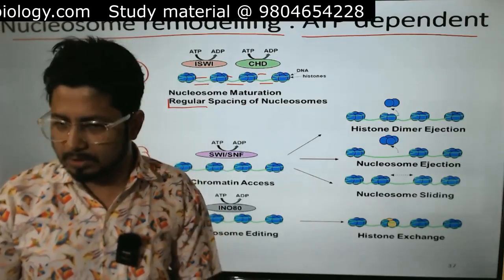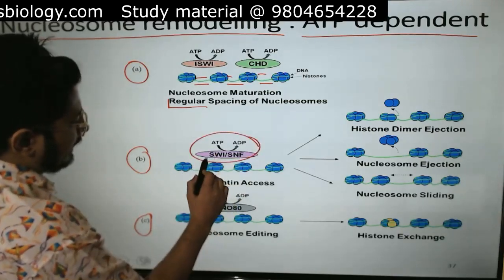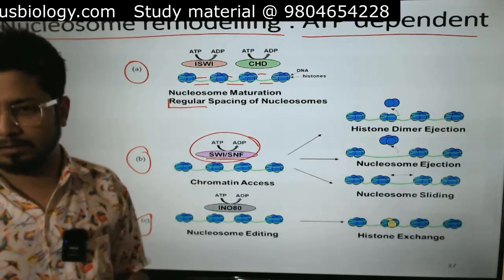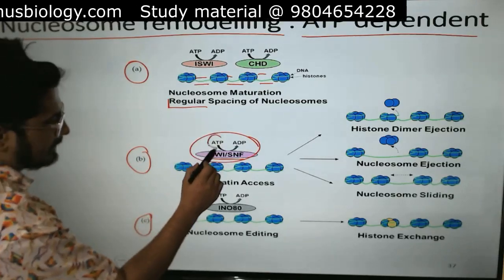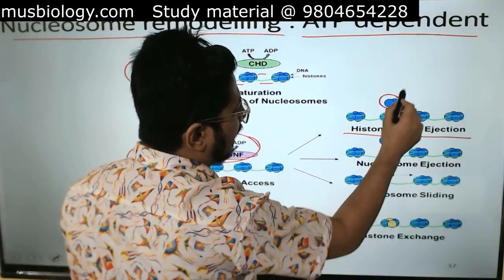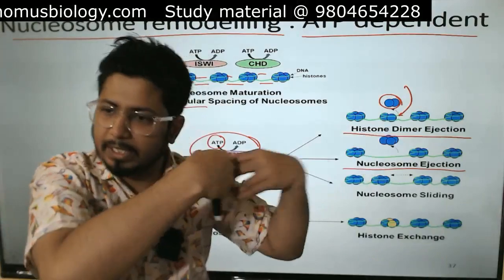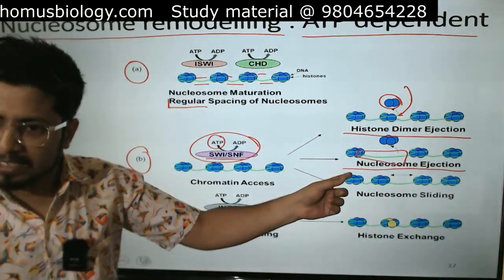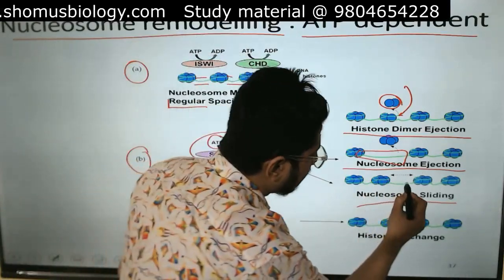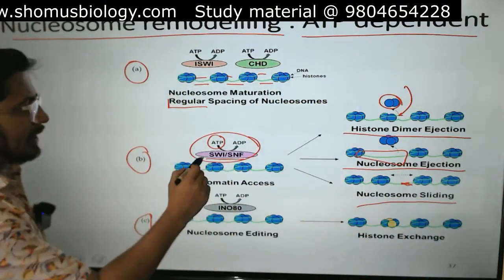If we recruit specific proteins known as SWI/SNF complex — switch sucrose non-fermentable nuclear remodeling complex — utilizing ATP as an energy source, they can cause histone dimer ejection, so new dimers can be added. They can cause ejection of a nucleosome, so one part of the whole octamer can be released and a long stretch of naked DNA becomes accessible. Or they can do nucleosome sliding — increasing the gap between two nucleosomes so a promoter can be accessed. Once the job is done, they will reslide it back. These modifications can be done by the SWI/SNF complex and are energy dependent.